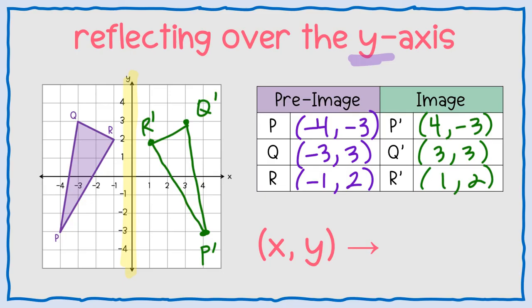So can we figure out the rule when reflecting over the y-axis? It's actually pretty simple — just take a look at the coordinates. Negative four, negative three changed to positive four, negative three. Negative three, positive three changed to positive three, positive three. The numbers are the same — the only thing that changed is the x values: negative four became positive, negative three became positive, negative one became positive. So it's the x value that changes to negative x, but the y value stays exactly the same.